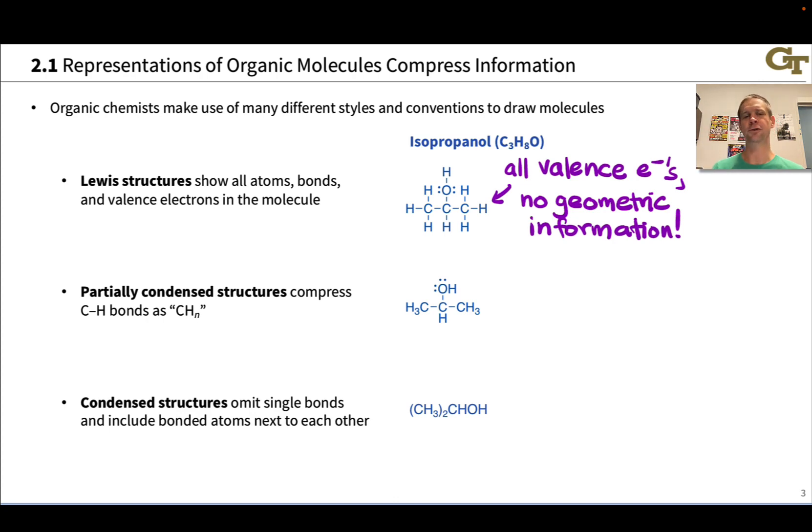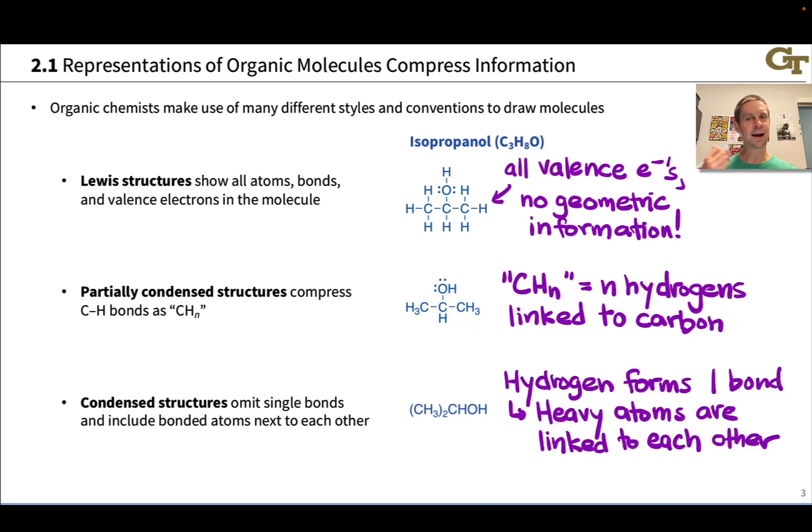A partially condensed structure takes the CH bonds and just puts carbon and hydrogen next to each other, and it's implied that the carbon and hydrogens are linked to each other. So if you see something like CHN, so CH, CH2, CH3, this means N hydrogens linked to that carbon atom. So a CH3, for example, has three hydrogens all linked to this carbon, and because hydrogen forms one and only one bond, we can infer in these partially condensed and in the fully condensed structures where we even omit the carbon-carbon bonds that the heavy atoms are linked to each other.